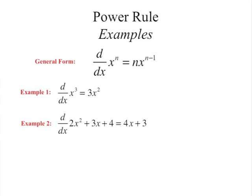The second example is a three-term polynomial: 2x squared plus 3x plus 4. Differentiating it, you bring the 2 down from the exponent and multiply to get 4x. For the 3x term, the exponent is 1, so 1 minus 1 is 0, the x goes away, leaving just 3. The constant 4 goes to 0.